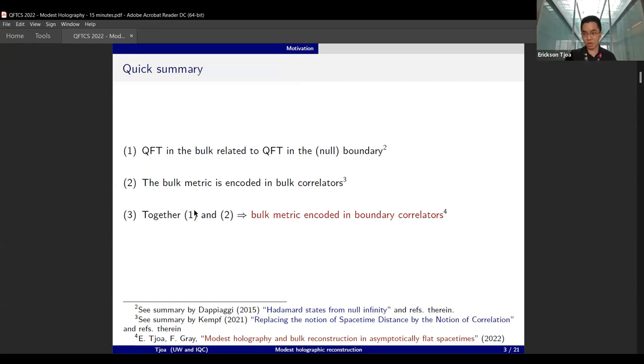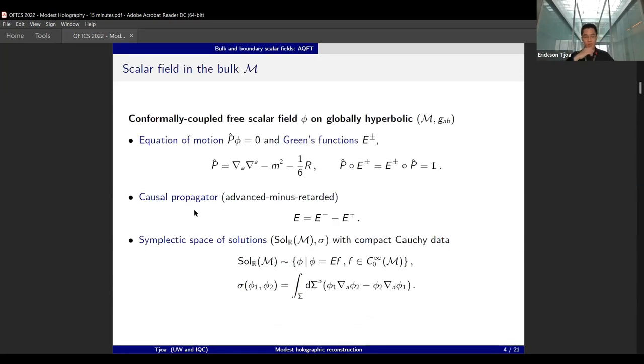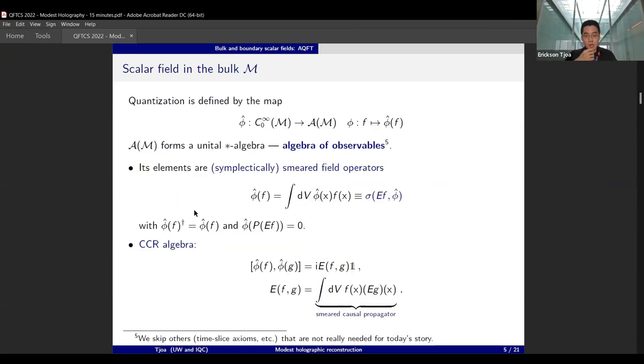The way to start this is to follow the first day of this workshop: to do it algebraically. First, you introduce a conformally coupled free scalar field on a globally hyperbolic spacetime in 3+1 dimensions. You have the equation of motion and the causal propagator, the Green's function of the theory. Using this, you can construct the symplectic space of classical solutions with compact Cauchy data with the usual inner product.